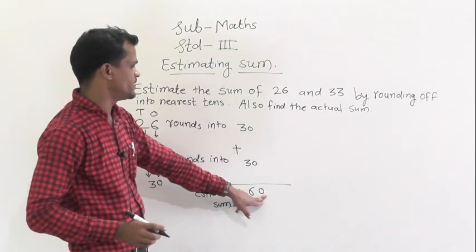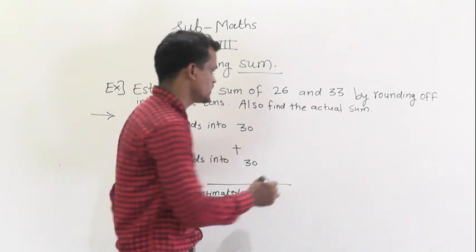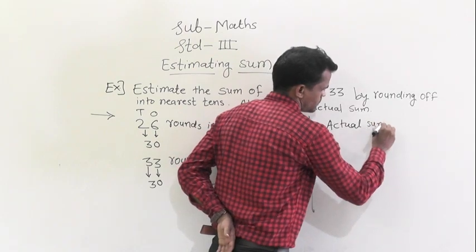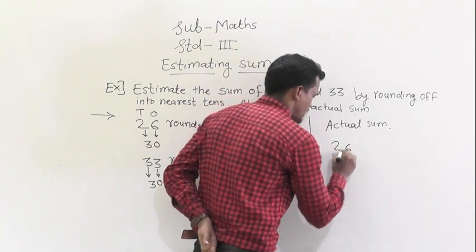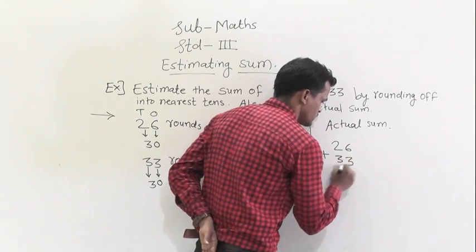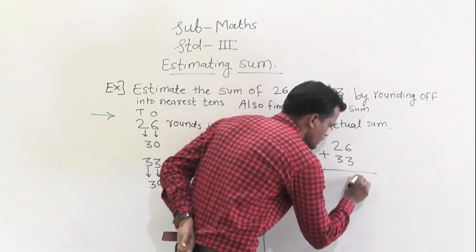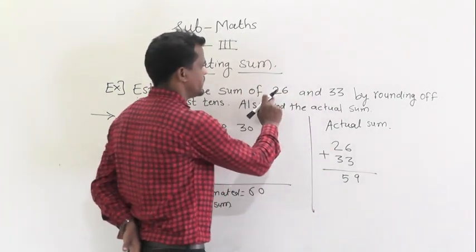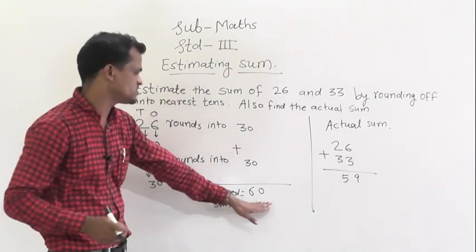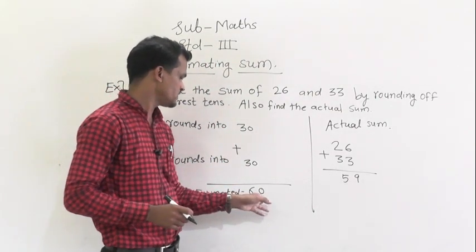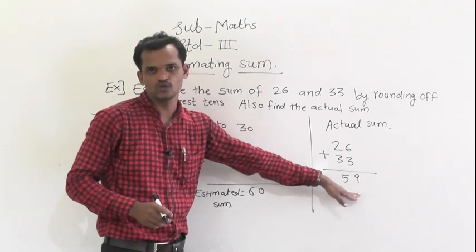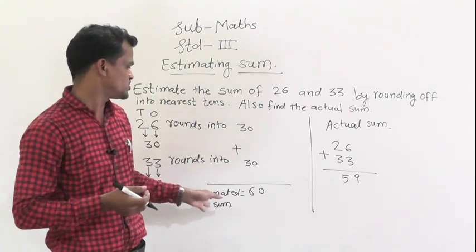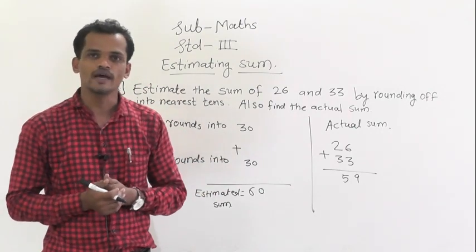So 60 is the estimated sum of 26 and 33. For the actual sum: 6 plus 3 equals 9, and 2 plus 3 equals 5, so the actual sum of 26 and 33 is 59. The estimated sum of 60 is nearest to the actual sum of 59, showing that the answer from estimating is very close to the actual sum.